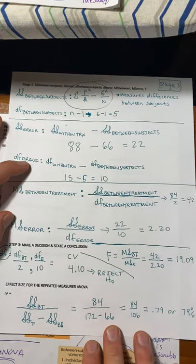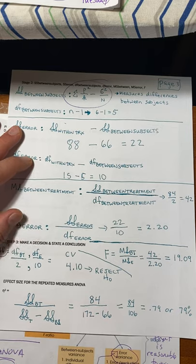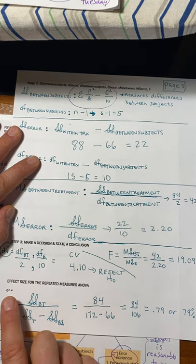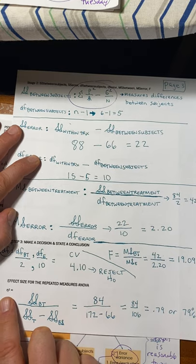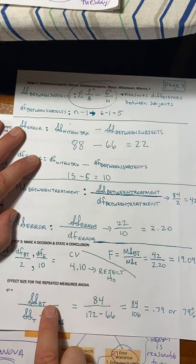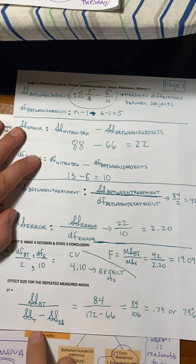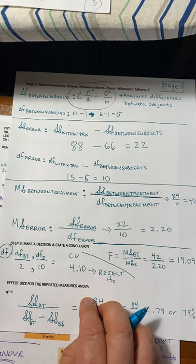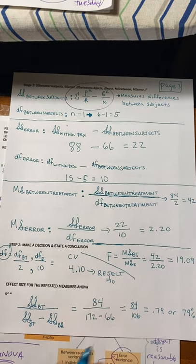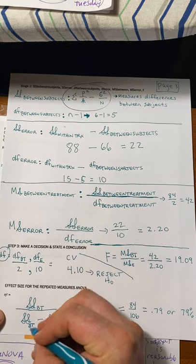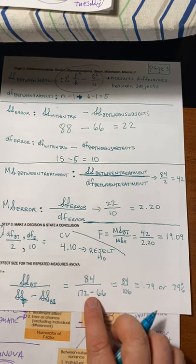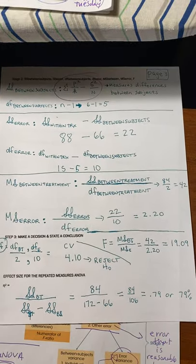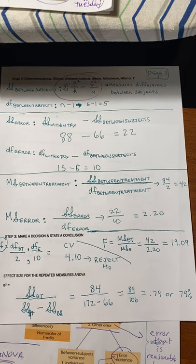Since we found a significant effect, we want to know how big that effect was. We calculate this with eta squared — previously called r squared. The formula is sum of squares between treatment divided by (sum of squares total minus sum of squares between subjects): 84 divided by (172 minus 66), which gives 0.79, or 79%. That's all for this chapter — thank you very much, see you next week.